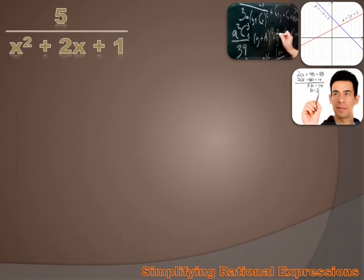How about this rational expression? 5 over x squared plus 2x plus 1. Does it have an excluded value? It does. When x squared plus 2x plus 1 equals 0, then the value of the expression is 5 over 0, which is undefined.